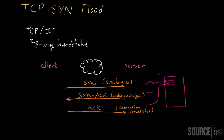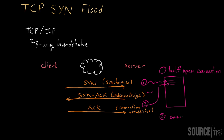When the SYN message is sent from a client to a server and the server allocates space — prior to when the ACK message is sent — we have what's called a half-open connection between the client and server. It stays in this half-open state until the final ACK message is sent. Once the ACK message is received by the server from the client, it becomes a fully open, regular connection.